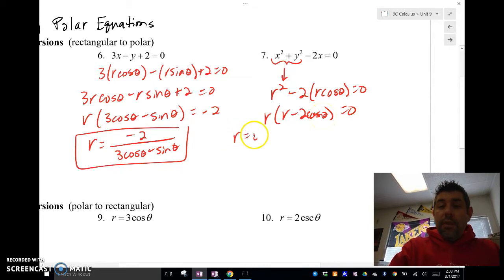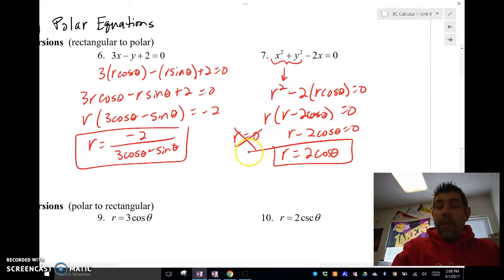Set each of them equal to 0 now. Now, r can't be 0, so that's not even a function. So we're really going to just have r = 2 cos(θ). There we go, that's our answer.